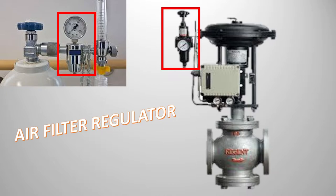On the right side you have a control valve with pneumatic tubing, and the tubing is fitted with an air filter regulator. You have a knob and other fittings. This is how an air filter regulator is installed in different applications.